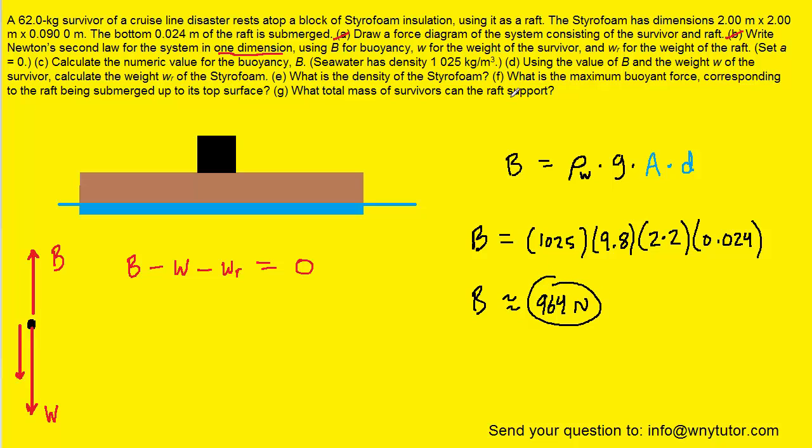Moving on, we see part D asks us to use this value of B and also the weight of the survivor to calculate the weight of the styrofoam raft. And really what we can do is actually go back to the Newton's second law equation that we had set up. We can fill in the buoyant force that we just determined. The weight of the survivor can be easily calculated by multiplying its mass times g, and then we can solve for the weight of the raft. Remember the mass of the survivor was 62 kilograms. And when we crunch that down and solve for wr, the weight of the raft, we would obtain approximately 357 newtons. So this would be the correct answer to part D of the question.